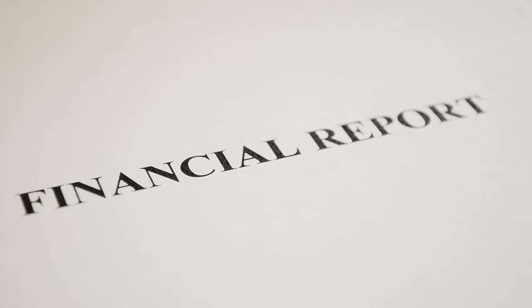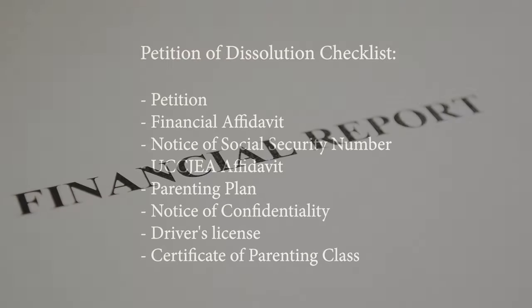So that is how you file for a petition for dissolution. To summarize, you need: your petition, your financial affidavit, your notice of social security number, and if you have children, your UCCJEA affidavit and parenting plan. Also required: your notice of confidentiality, your driver's license, and your certificate of completion for a parenting class.